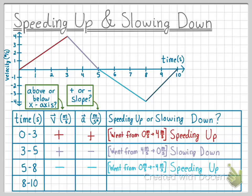Lastly, we will analyze the portion of the graph from 8 to 10 seconds. The graph is still below the x-axis, so we know it still has a negative velocity, and the slope of the graph is again positive, so we have a positive acceleration. We started with a speed of 4 meters per second in the negative direction and ended with a speed of 0 meters per second, or rest. Since we had a decrease in speed, we know that the object was slowing down.